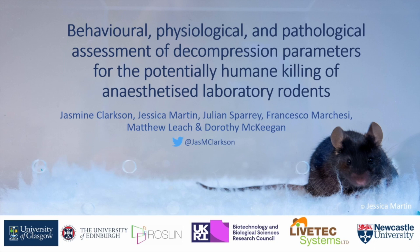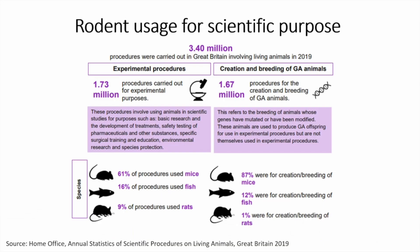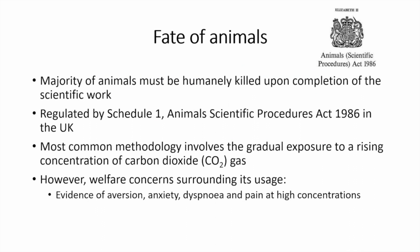Good morning, and thank you very much to the organizing committee for the opportunity to talk about this work, which is focused on finding humane alternatives to carbon dioxide killing for laboratory rodents. Rodents are the most commonly and widely used species for scientific purpose. As you can see for the annual statistics returned for 2019 by the UK Home Office, mice made up a large proportion of the animals used for scientific purpose, including the vast majority of experimental procedures conducted, as well as being heavily involved in the creation and breeding of genetically manipulated animals. In the UK, this is regulated by schedule one of ASPA, which lists a number of permitted methods to kill these animals.